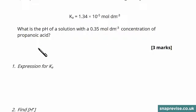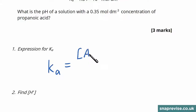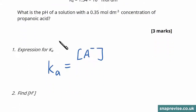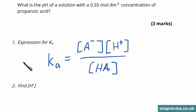Firstly we need to write out the expression for Ka if we're going to remember how to get to the concentration of H plus ions. So it's the concentration of the conjugate base — we'll write A minus instead of the specific one for propanoic acid — multiplied by the concentration of H plus ions, divided by the concentration of the undissociated acid.